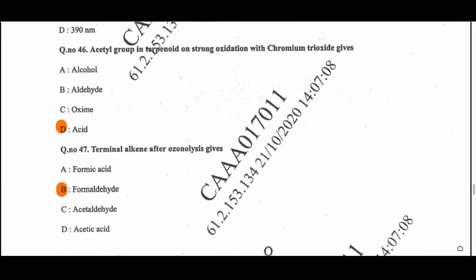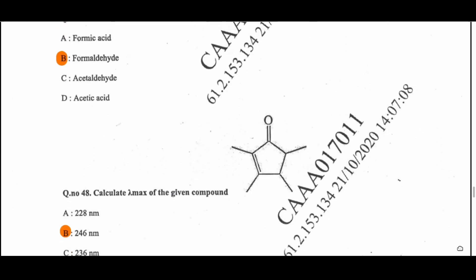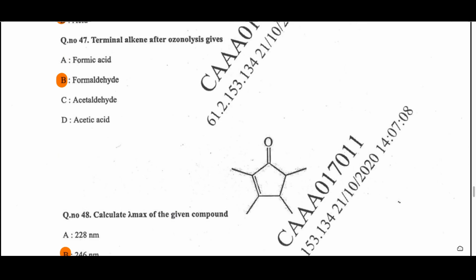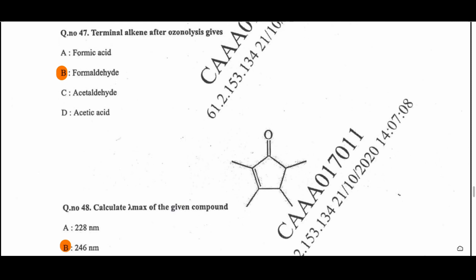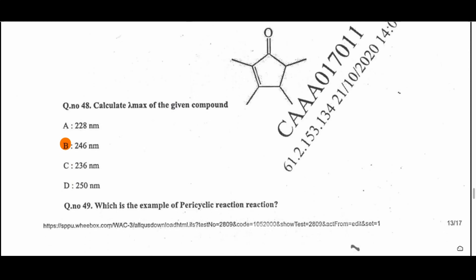Question 46: An acetyl group in a terpenoid upon strong oxidation with chromium trioxide gives an acid — the acetyl group is converted to a carboxylic acid. Question 47: A terminal alkene after ozonolysis gives formaldehyde — option B is correct. Question 48: Calculate lambda max for the given compound. It is again a 5-membered enone and after calculation lambda max is 246 nanometers.